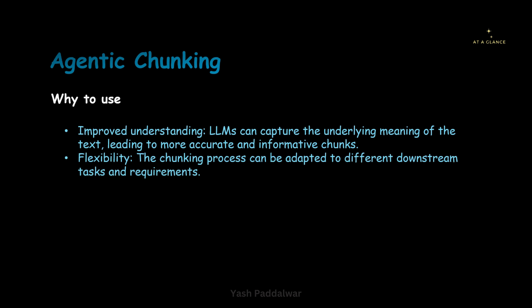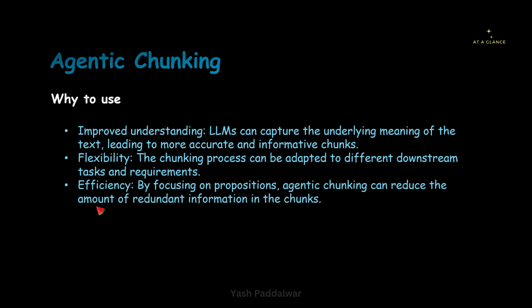Next, this strategy is flexible — it is known for its flexibility. The chunking process can be adapted to different downstream tasks and requirements. We have already discussed what tasks we can perform using this particular chunking strategy. Next, it is known for its efficiency. By focusing on propositions, agentic chunking can reduce the amount of redundant information from the chunks. If your actual data contains repetitive statements which might create confusion in the RAG system, this particular chunking strategy will also reduce the redundant information — it will only keep the meaningful and important information, and by this the entire RAG flow will become efficient.